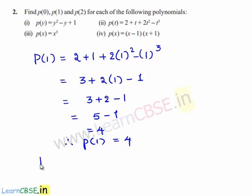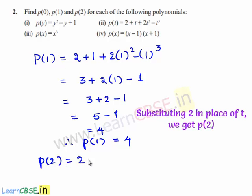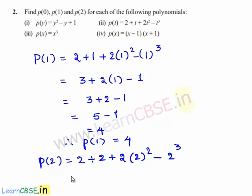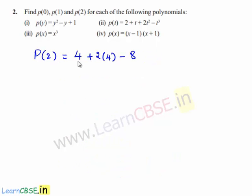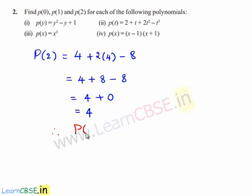p(2) equals 2 plus 2 plus 2 times 2 squared minus 2 cubed. That is 4 plus 2 times 4 minus 8, which equals 4 plus 8 minus 8, which equals 4 plus 0, which equals 4. Therefore p(2) equals 4.